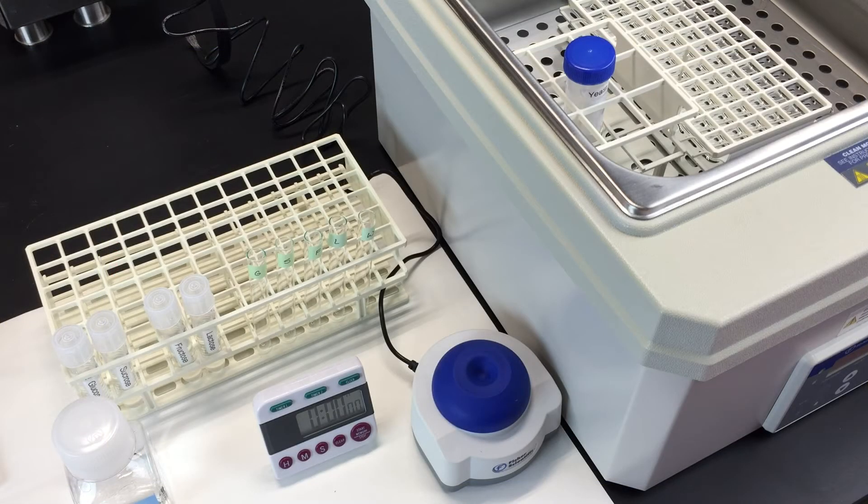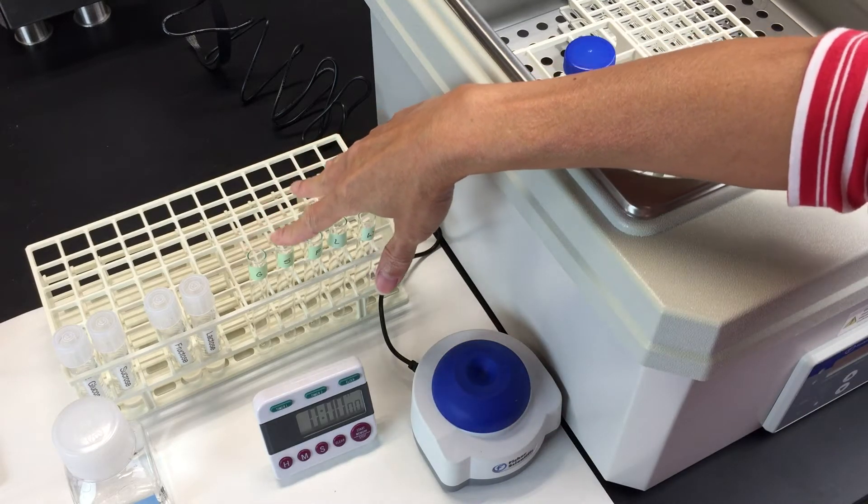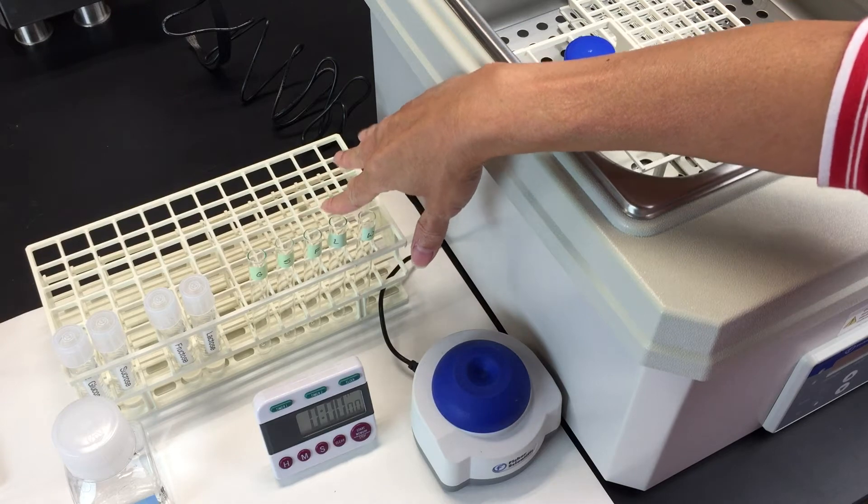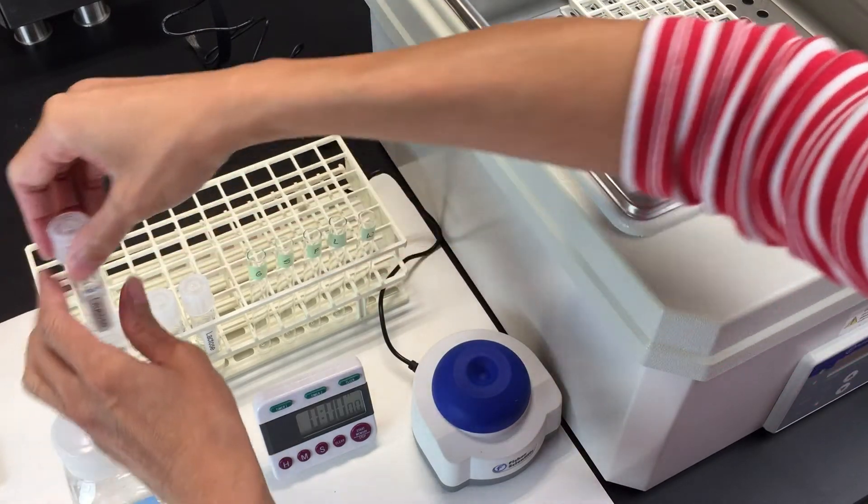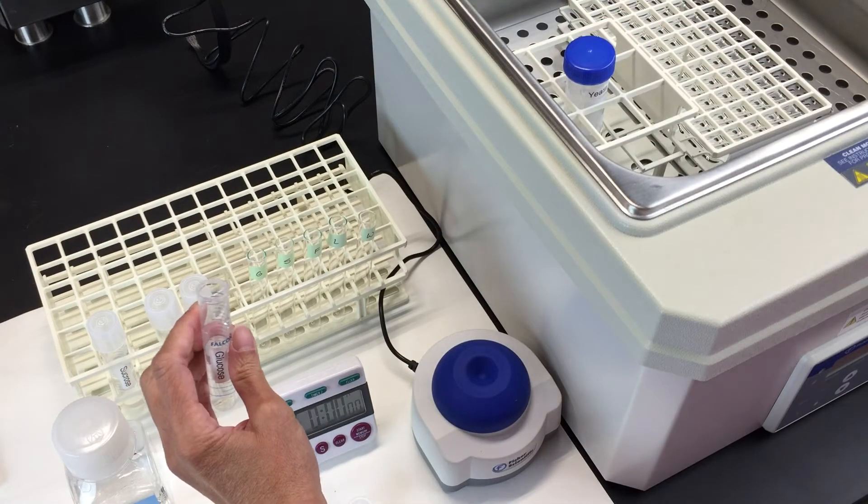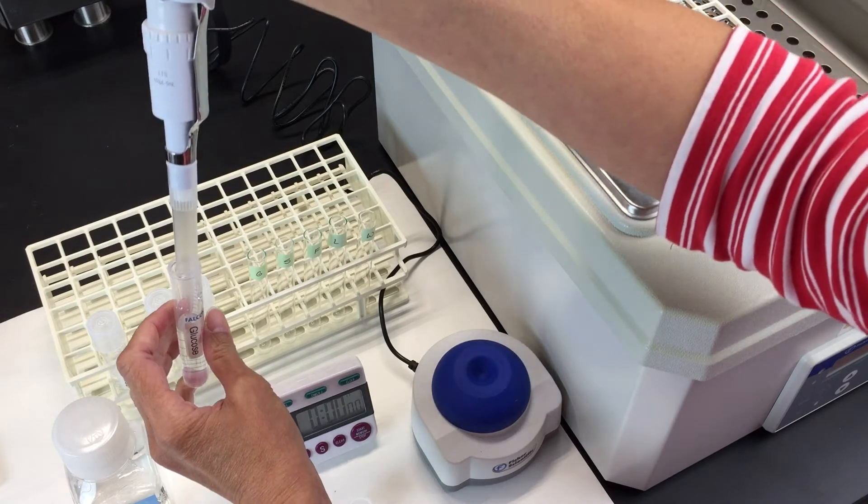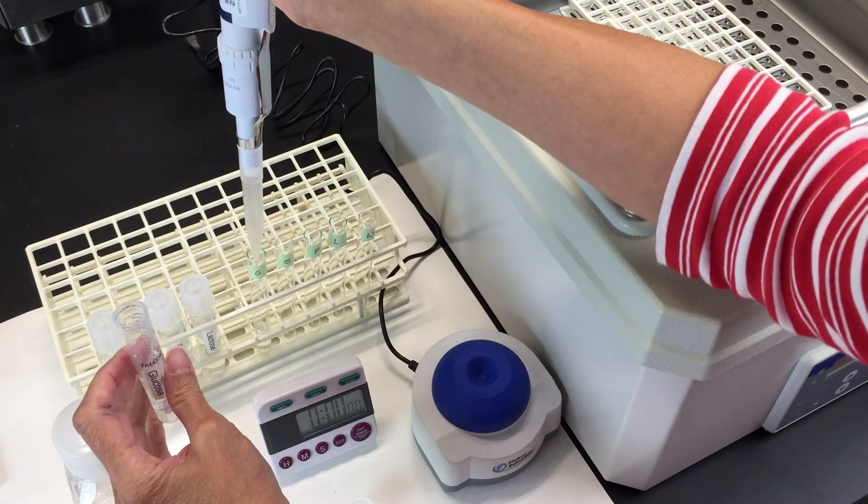Now you can set up your test tubes. Label 5 test tubes for glucose, sucrose, fructose, lactose, and water. You want to put 2 milliliters of your sugar solution into the corresponding tube. So 2 milliliters of glucose into the glucose tube, and 2 milliliters of sucrose into the sucrose tube.